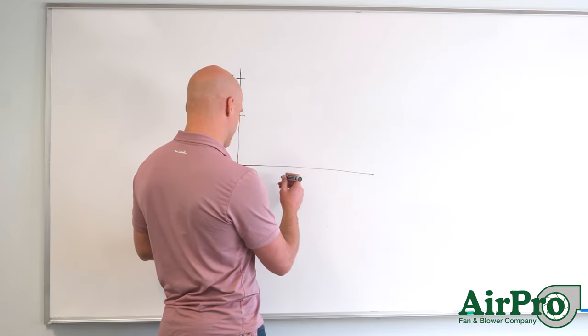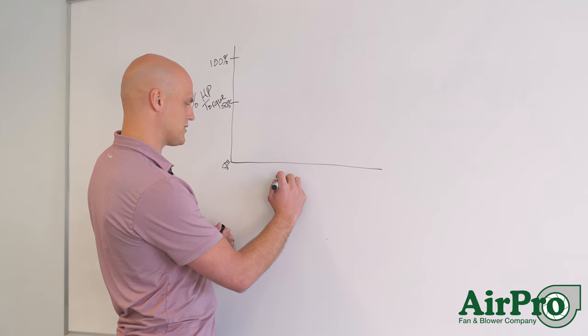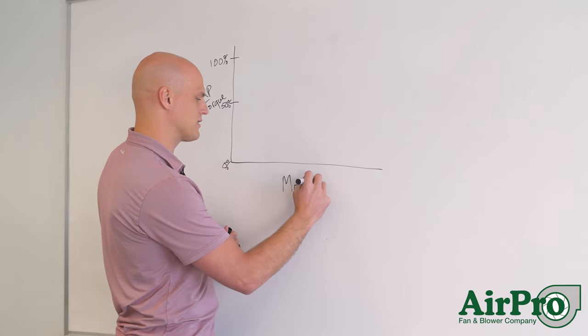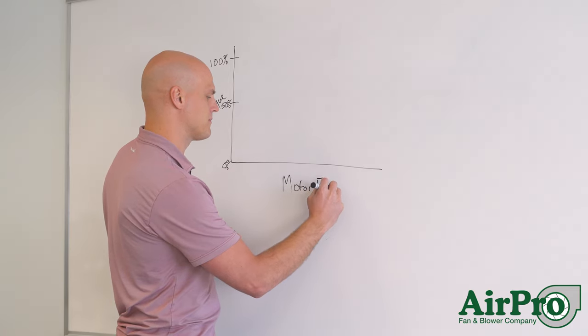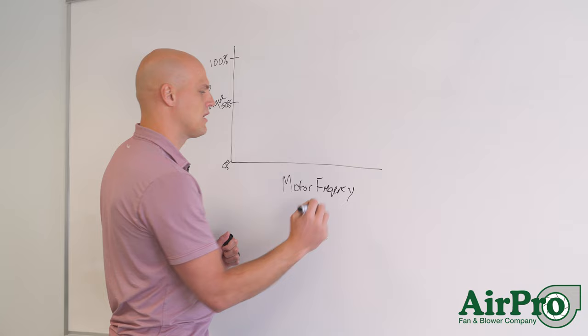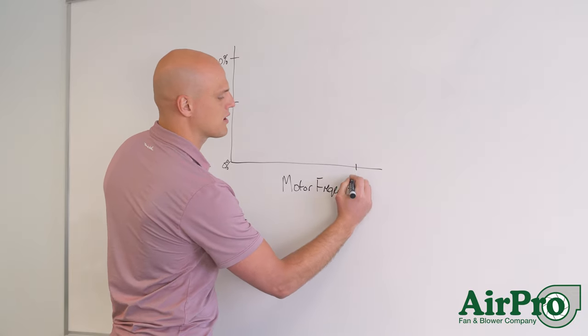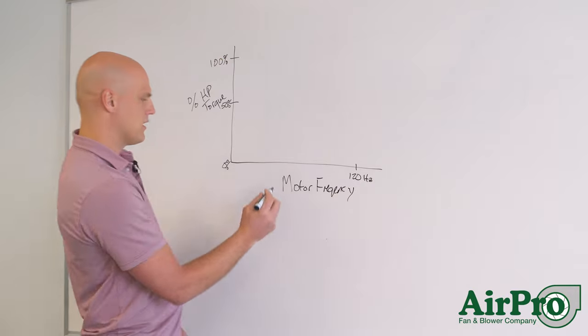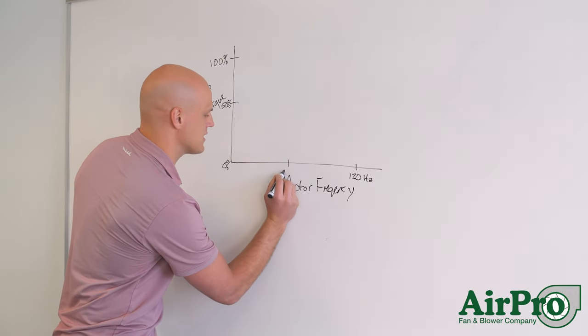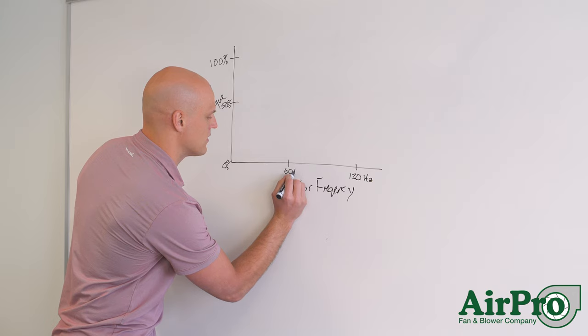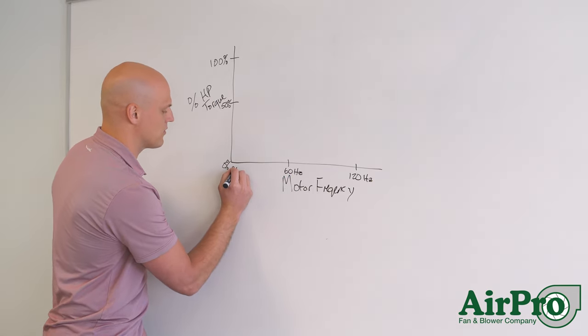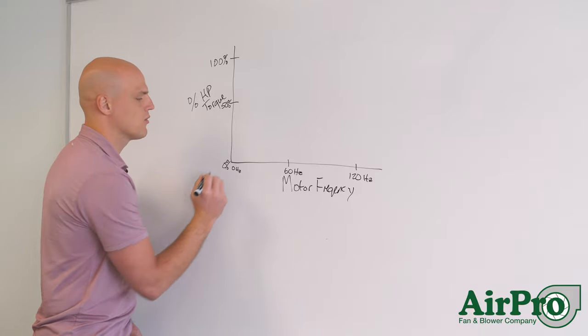And so down here we've got the speed as listed in frequency. So I'm going to write this as motor frequency. And out here in the far right we're going to go 120 hertz. That means in the middle we're targeting 60 hertz. And back here we're at 0 hertz at the origin.